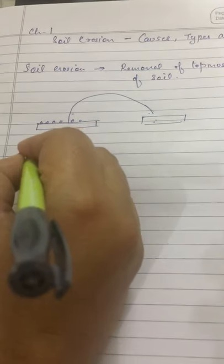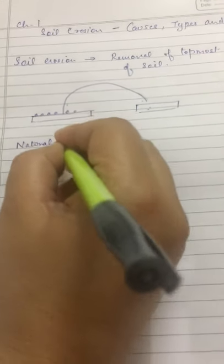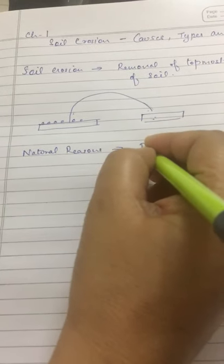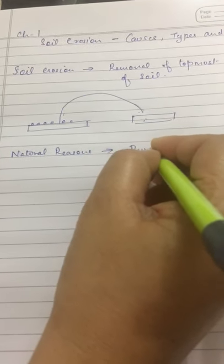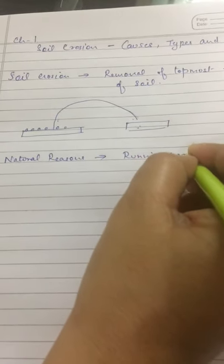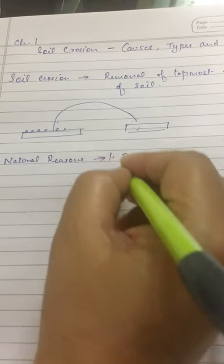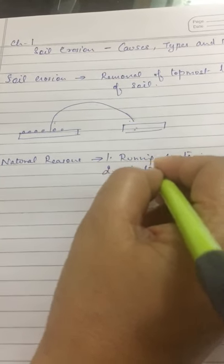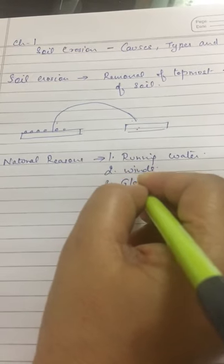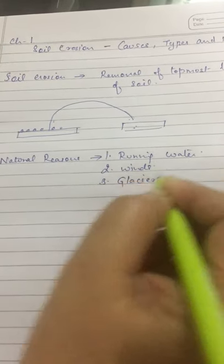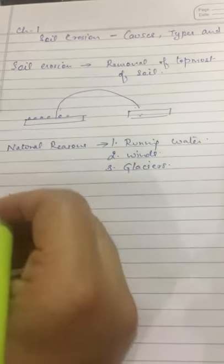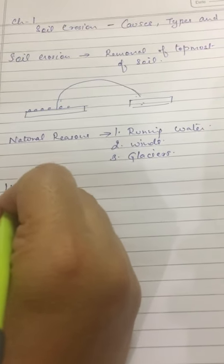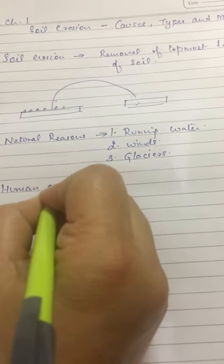The natural reasons of removal are: number one, running water, which is also called rivers; number two, blowing winds; and number three, glaciers. These are the natural reasons for removal of the topmost layer of soil.